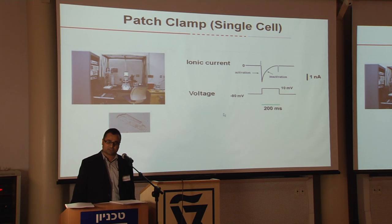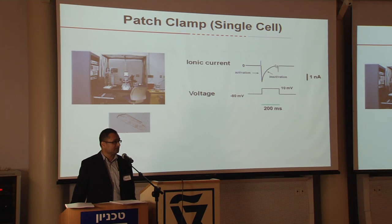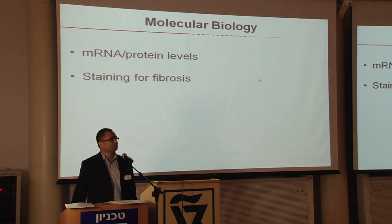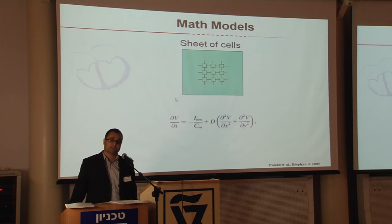We also used patch clamp to study the ionic properties of different currents in single cells. This is a typical patch clamp setup with an inverted microscope — you put a cardiac cell in, poke it with an electrode, and using voltage clamp techniques you can study potassium, calcium, or sodium channels. We also used standard molecular biology techniques to quantify mRNA, protein levels, and fibrosis. My background is electrical engineering, so I also use computer modeling to interpret experimental recordings and solve simple reaction-diffusion equations to understand whether data from cell to heart level is consistent.